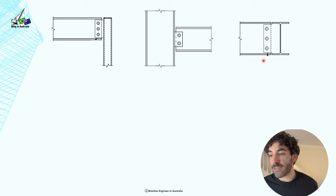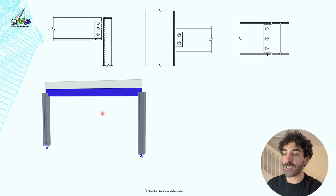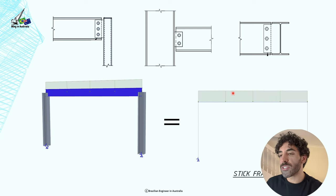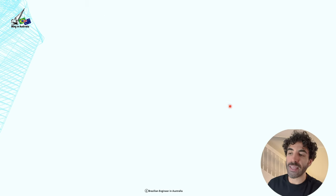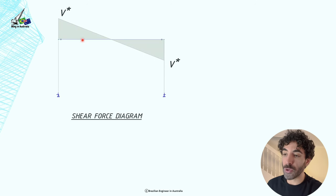So let's imagine we have this frame to design, which is a column, a column and a beam and a uniformly distributed load. So it's a simply supported beam and the shear force diagram would look like this. And this is the connection that we're going to have to design.